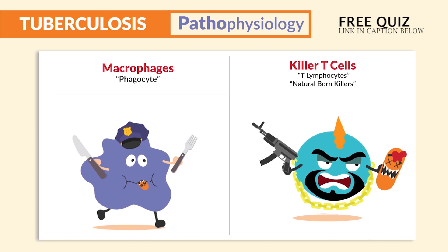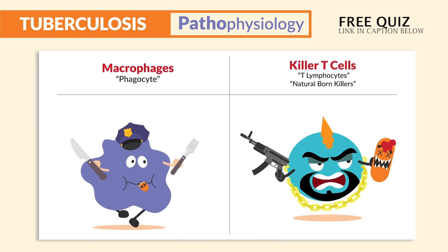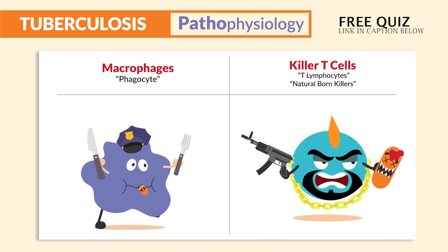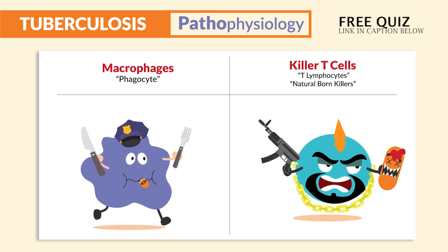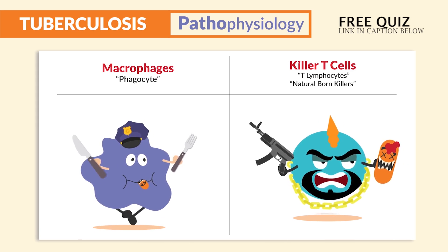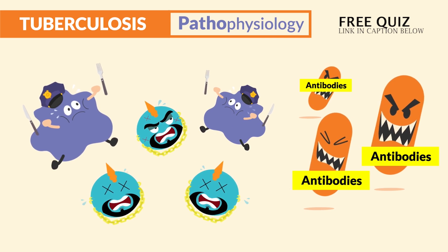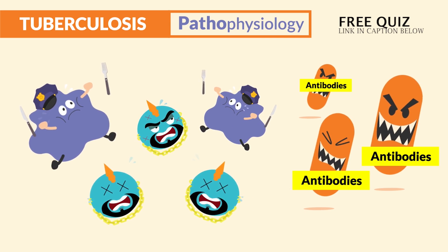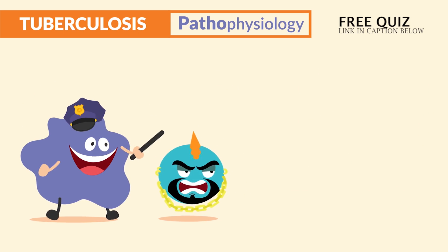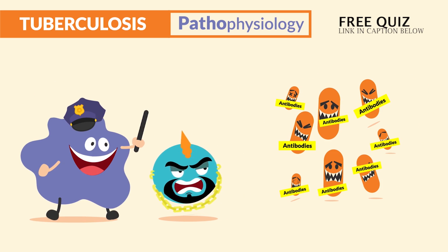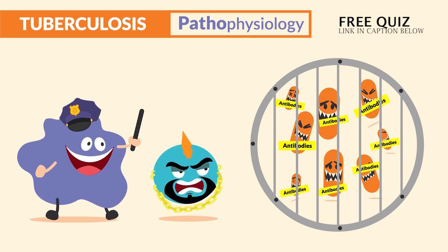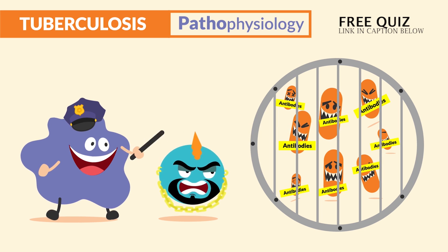And the killer T cells, also called the T lymphocytes — or natural born killers, my favorite name — we call them the Mr. T cell from the A squad, who says 'I pity the fool who invades the body.' Now all these guys work together to try and kill TB, but they can't, so they end up quarantining the TB infection into a little granuloma prison, which prevents the TB infection from spreading.